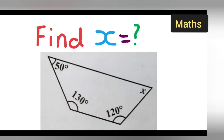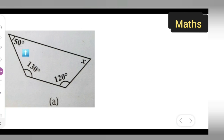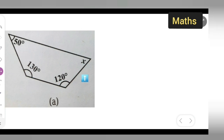Welcome to today's class of mathematics. Today's question is: find the value of x. Given angles are 50°, 130°, 120°, and x. The sum of interior angles of a quadrilateral is 360°.